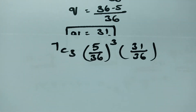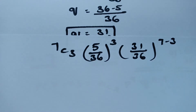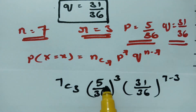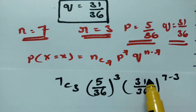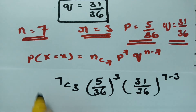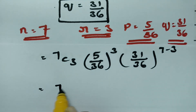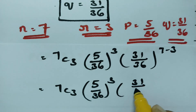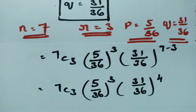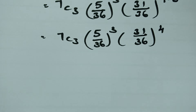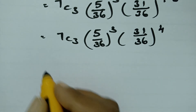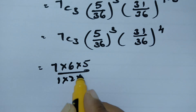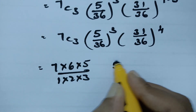So the expression becomes 7C3 × (5/36)^3 × (31/36)^4. Expanding 7C3 = 7 × 6 × 5 / (1 × 2 × 3) = 35, and 5^3 = 125. The denominator becomes 36^(3+4) = 36^7.